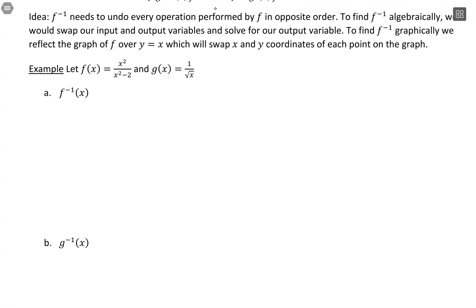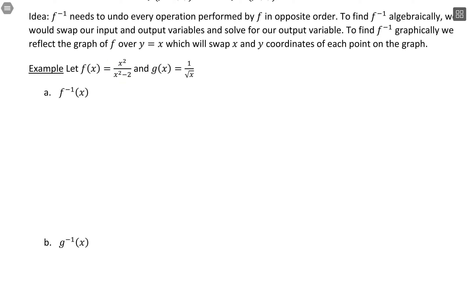Now let's look at finding inverses algebraically. What we're going to do is switch our input and output values and solve. These will be a bit complicated, but we want to see those tricky pieces together. We're going to take the inverse of this function: x² over (x² − 2).